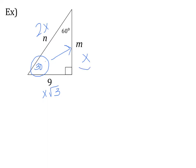Here I see that m is equal to x, so on this side I could also write 2m, and on this side I could also write m√3, because anytime I see x I can replace it with m. When solving these triangles, we always start with the side that we know — in this case, that side is 9.